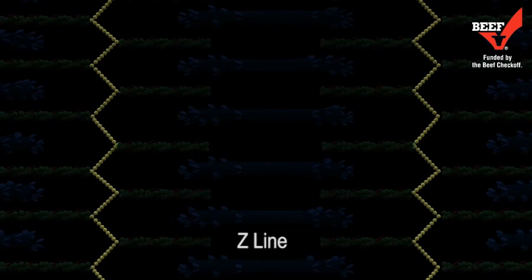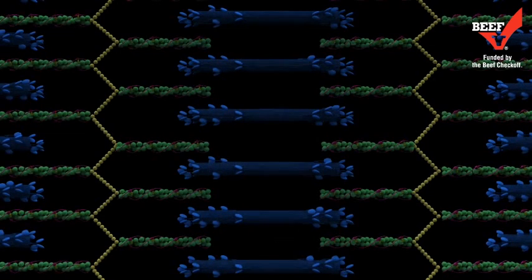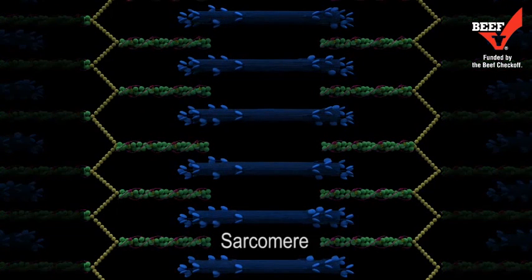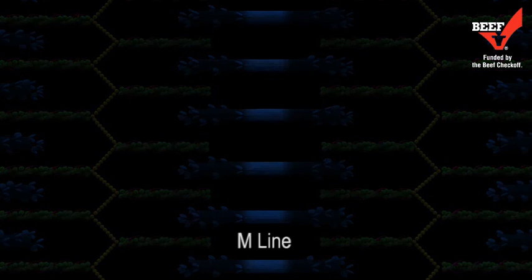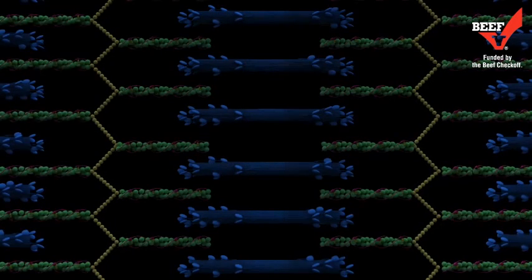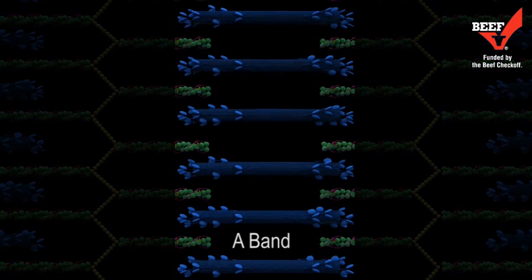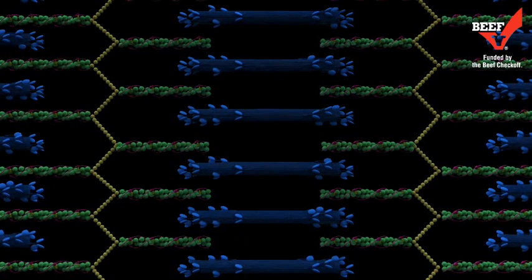The area between Z-line and Z-line is designated as a sarcomere and serves as the contractile unit. The M-line bisects the sarcomere. The dark appearing A-bands are a result of overlapping thick and thin filaments.